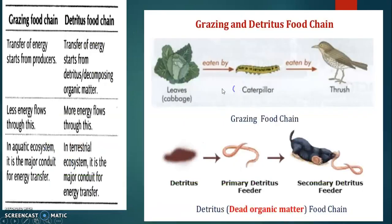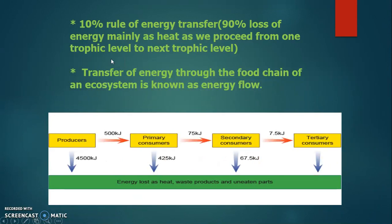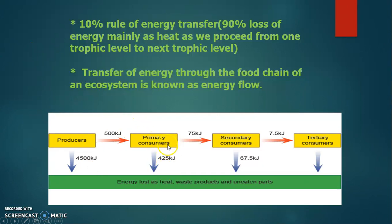The transfer of energy through the food chain of an ecosystem is known as energy flow. Here, if producers transfer 500 kilojoules of energy, only 10% — which is 50 kilojoules — goes to the primary consumer. The remaining 450 kilojoules is lost. Then from the next trophic level, 10% is again transferred to the tertiary consumers.